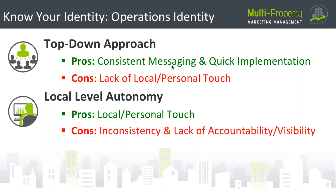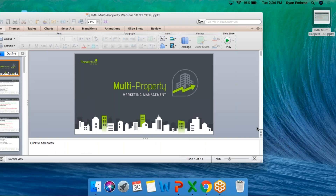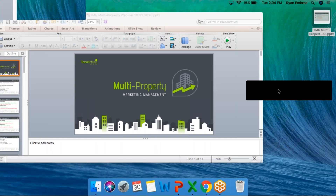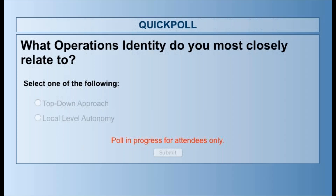To get a better gauge on who we have on the line today, I'll go ahead and open up an anonymous poll to see where you most closely relate your operations identity — would it be that top-down approach handled by corporate or regionals, or is it the local level autonomy? This will also give us a really good gauge on how to tailor this presentation moving forward.